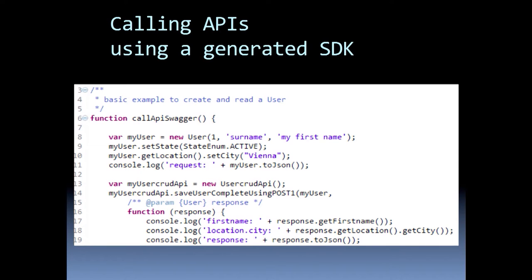This is how it looks if you are calling using a generated SDK. You are able to instantiate a request, use enumerations, use getters and setters for nested properties, and instantiate the API and call an operation as if it were a local JavaScript function call. You have no idea that this is a REST API call — you just use it. And this is possible today.